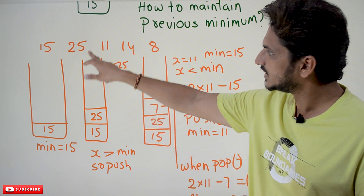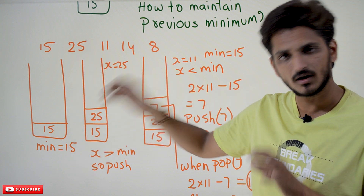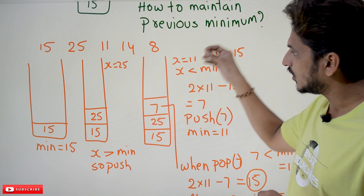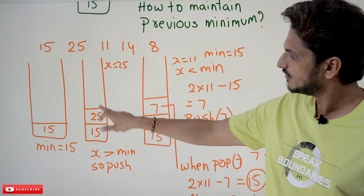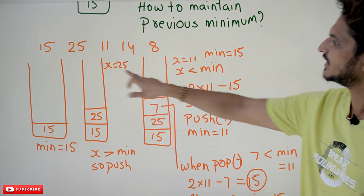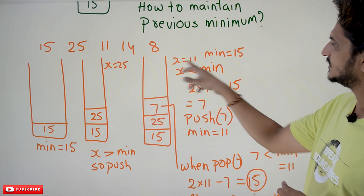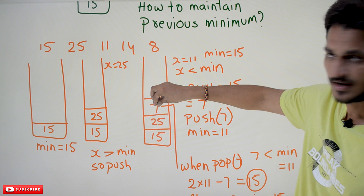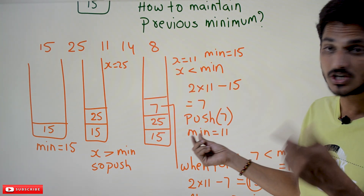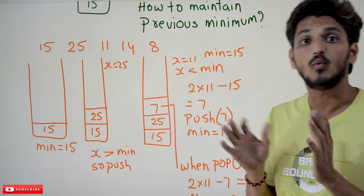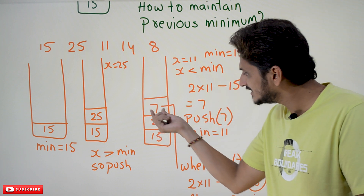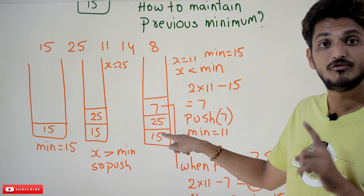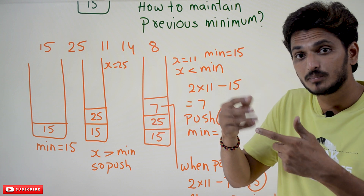This is one condition: if the element you want to push is greater than or equal to the minimum element, simply push it. Now the next element you want to push is 11. X is equal to 11, and min is equal to 15. X is less than min — 11 is less than 15. Whenever this happens, instead of pushing 11, we push 7. Why? Because we do 2 multiplied by 11 minus 15, which gives 7. Push 7 onto the stack and maintain min equal to 11.